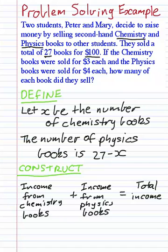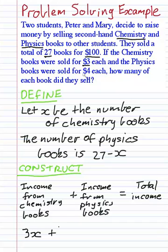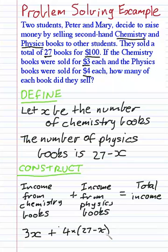Let's put those things together. What is the income from the chemistry books? Each chemistry book was sold for $3 each, and there are X of them, so the income from the chemistry books will be 3X. The income from the physics books: each was sold for $4, and 27 minus X of them were sold, so it's 4 times (27 minus X). The total income was $100.